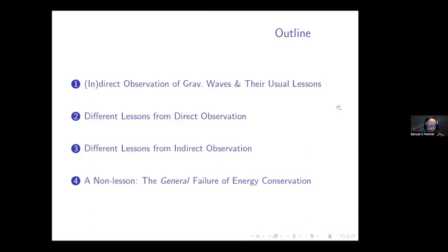Here's the outline of what I'd like to talk about. In the first part of the talk, I'd like to talk about the evidence we have — very briefly — for gravitational waves and the thought experiments that go into describing what sorts of effects they have on physical phenomena, and the usual lessons drawn from gravitational waves about energy in general relativity. There are two types of observation involved: direct and indirect observation, sometimes called direct detection and indirect detection.